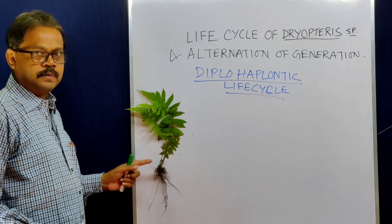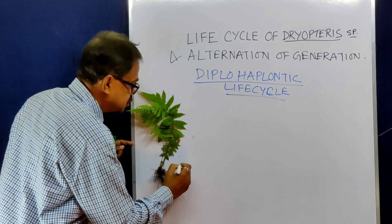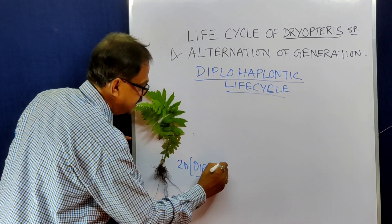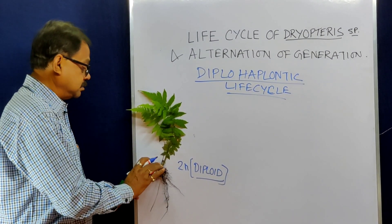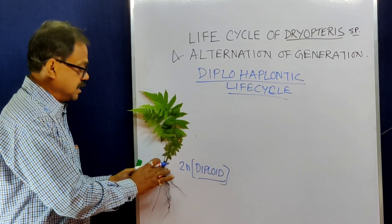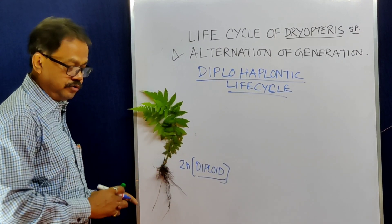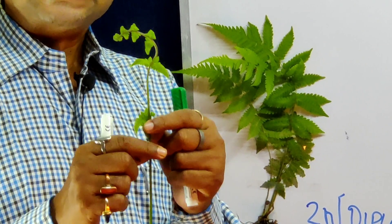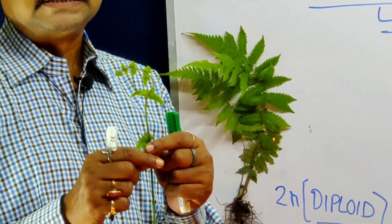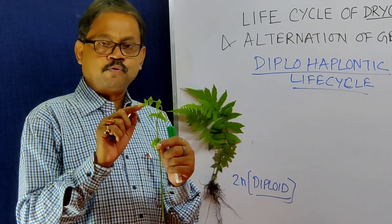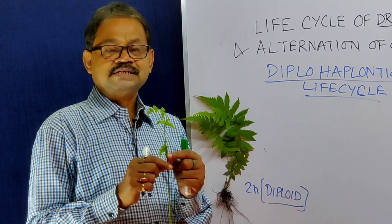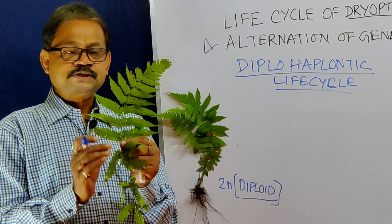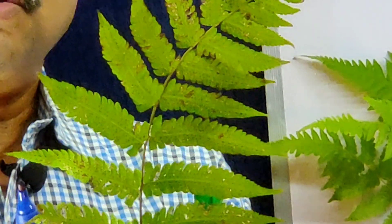The main body of Dryopteris is the sporophyte, which means it is diploid. This diploid body has three parts: adventitious roots, a rhizomatous stem, and a leaf called the frond. The younger leaves have a coiled structure called the circinate vernation or circinate axis. The leaf of Dryopteris is pinnately compound.